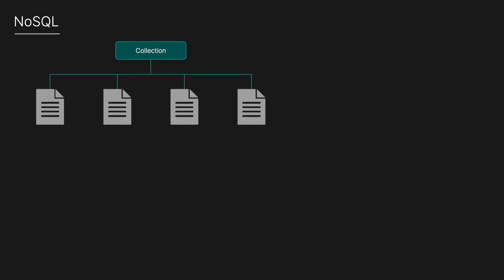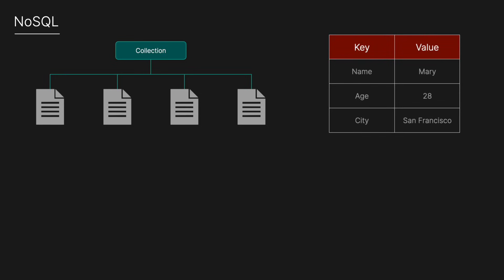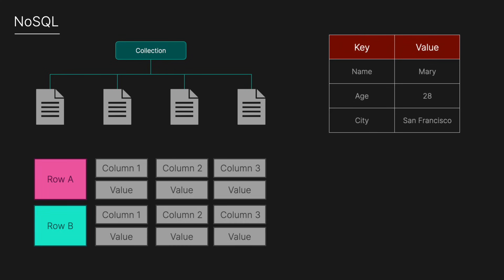Now let's look at NoSQL. NoSQL stands for 'not only SQL,' and it's a category of database systems that deviate from the traditional relational model. NoSQL databases handle unstructured or semi-structured data, and are designed for flexible schemas, high performance, and scalability. Key characteristics include flexible schemas that allow data structures to evolve over time without expensive migrations, horizontal scalability to distribute data across multiple servers, high performance optimized for large-scale rapid reads and writes, and eventual consistency — often a trade-off between immediate consistency for better performance and availability.